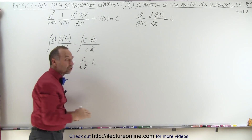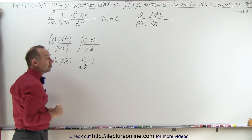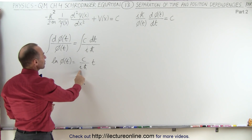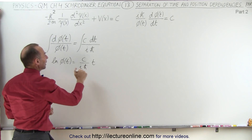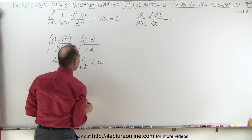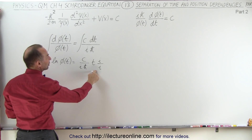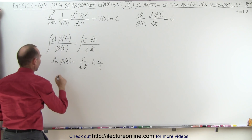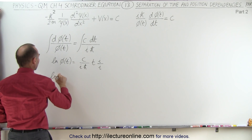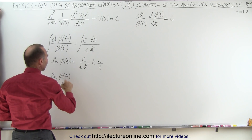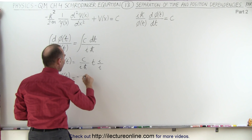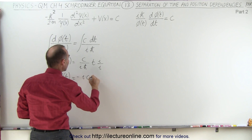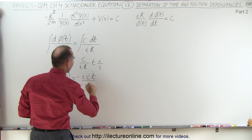I'm not going to add another constant of integration because I already have a constant of integration here, so it would just simply become another c. What I am going to do is multiply both the top and the bottom by i — multiply by i divided by i — and i times i is i-squared, which is equal to negative one. So by moving the i to the numerator, I have to put a negative in front. This ends up being: the natural log of the wave function as a function of time equals negative i times c times t divided by h-bar.